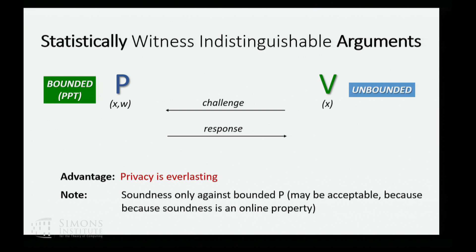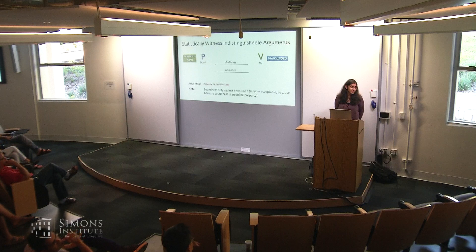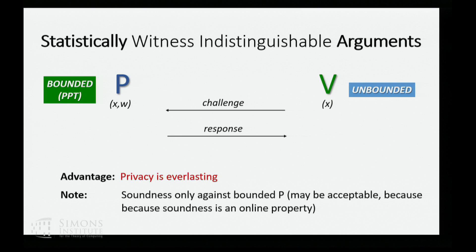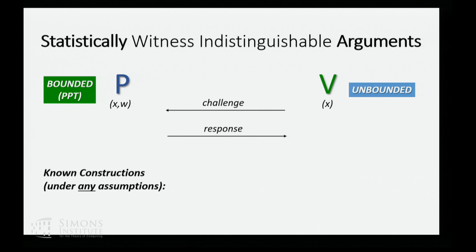You want witness indistinguishability to be independent of the assumption, and maybe use the assumption only to guarantee soundness in a case where the prover is bounded and the verifier can run in unbounded time and try to break the assumption. Soundness is typically required to be an online property, so if the prover is honest at the time of running the proof, having a bounded prover makes more sense than requiring a malicious verifier to be bounded. Known constructions in this setting, basically before the works I'm going to talk about, did not exist.